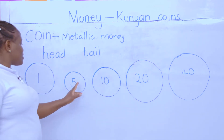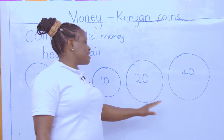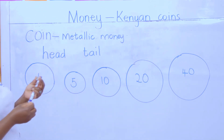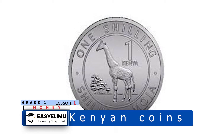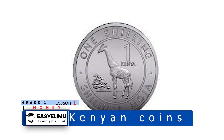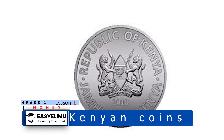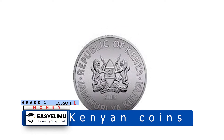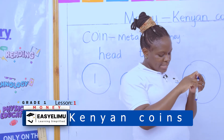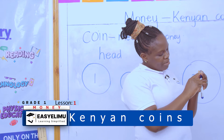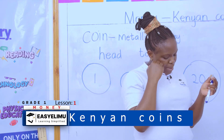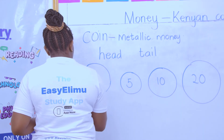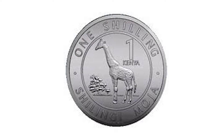One shilling is not the same as 5 shillings, 10 shillings, 20 shillings, or 40 shillings. Look at your 1 shilling coin. The head is the one that has an animal in front. The tail has two lions and something that is found on the flag. The head of the 1 shilling coin is a giraffe.